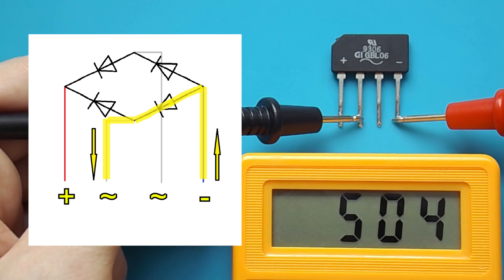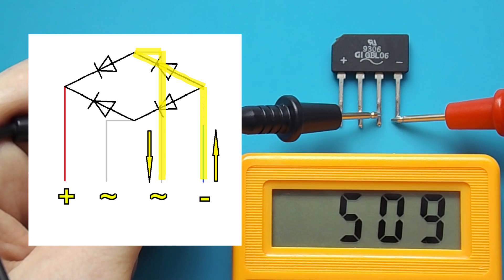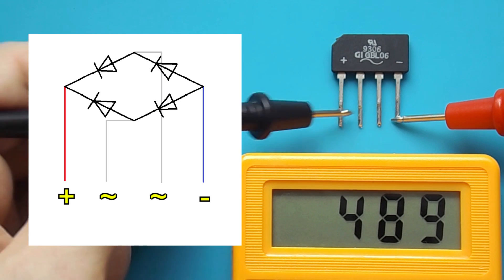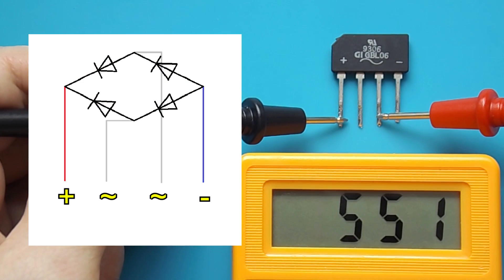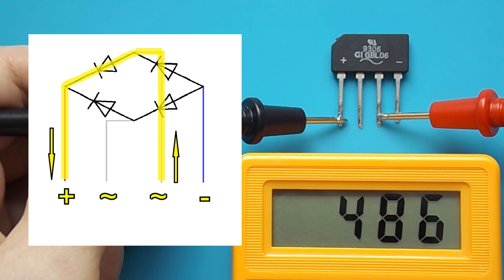Then I check both pins of the AC input for negative. On each leg, the multimeter should show the voltage drop of one diode. Then I repeat the operation in the same way, checking the AC input with respect to the plus.